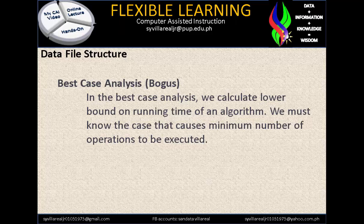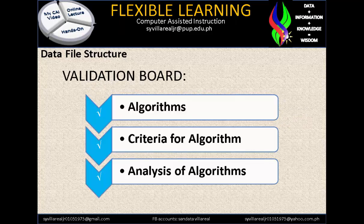Finally, best case analysis — considered somewhat idealistic. We calculate the lower bound on running time of an algorithm; we must know the case that causes the minimum number of operations to be executed. It means we can finish solving the problem in a very short time. So in summary, we have finished Algorithm, Criteria for Algorithm, and Analysis of Algorithm.